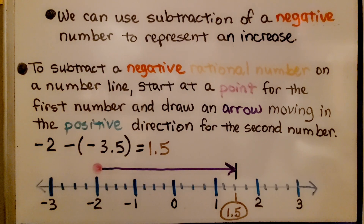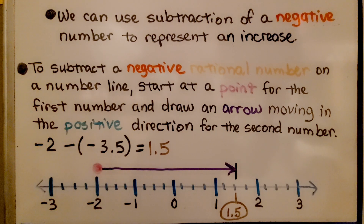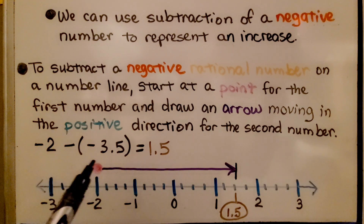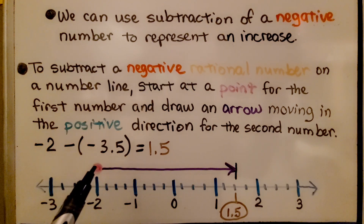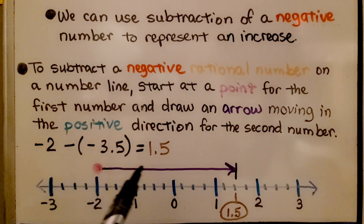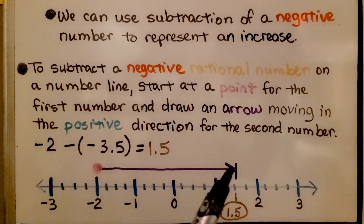We can use subtraction of a negative number to represent an increase. To subtract a negative rational number on a number line, we start at a point for the first number and draw an arrow moving in the positive direction for the second number.